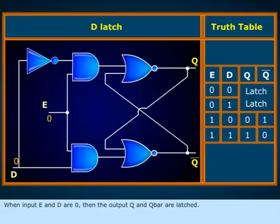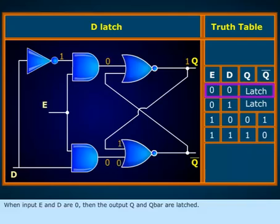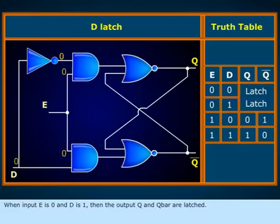When input E and D are zero, then the output Q and Q bar are latched. When input E is zero and D is one, then the output Q and Q bar are latched.